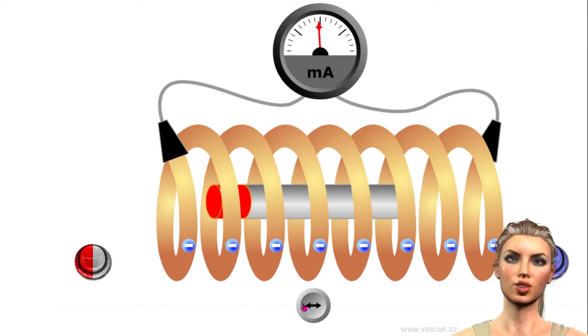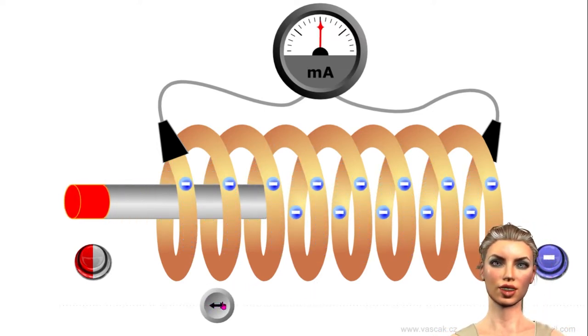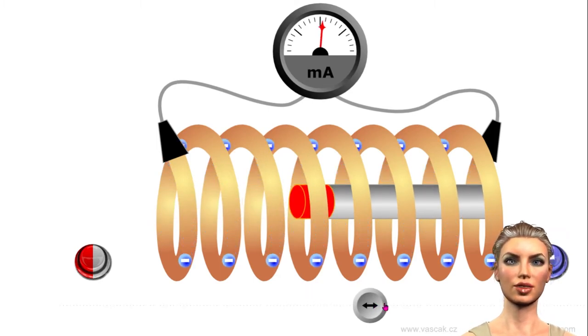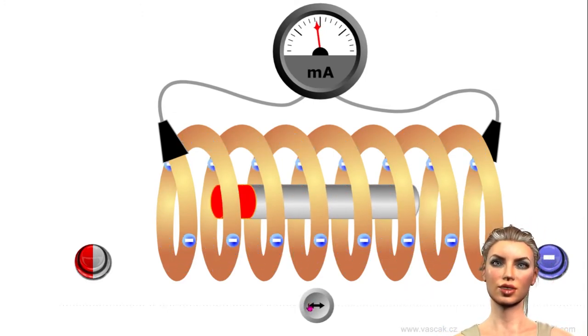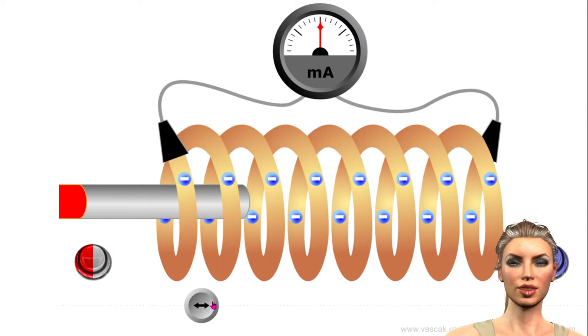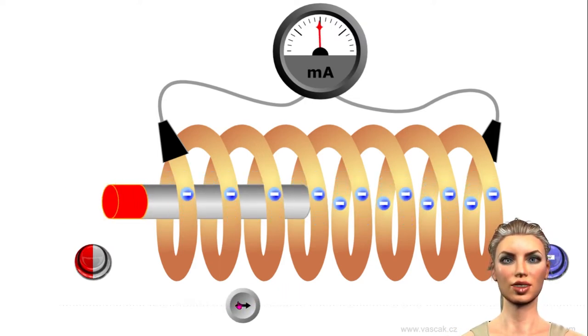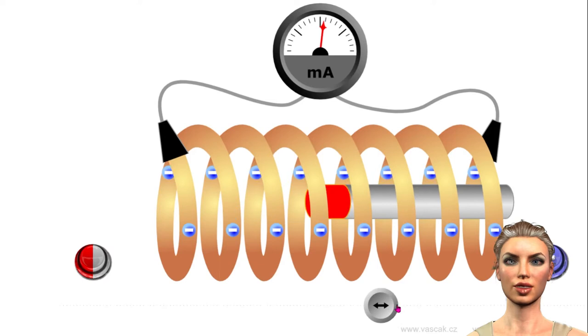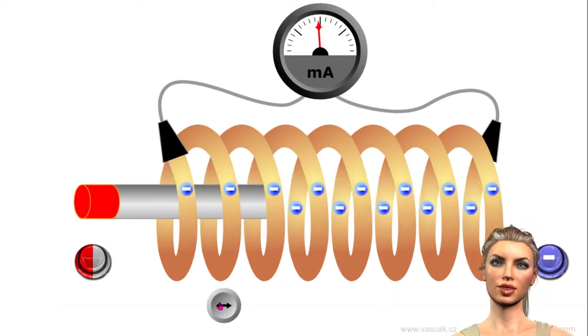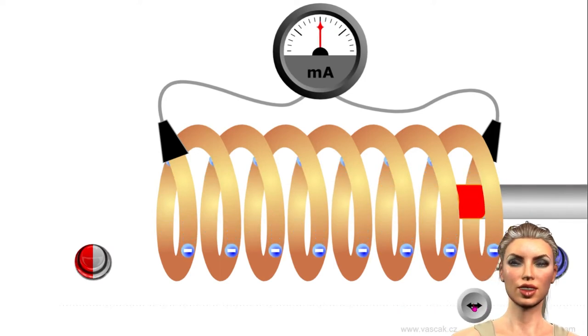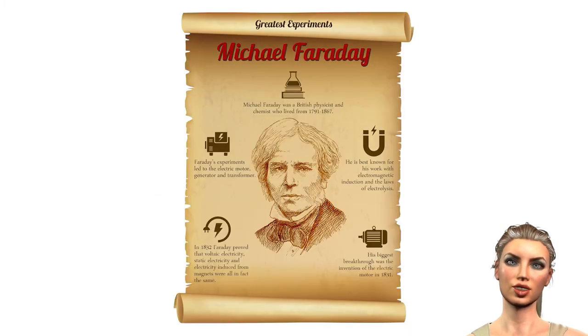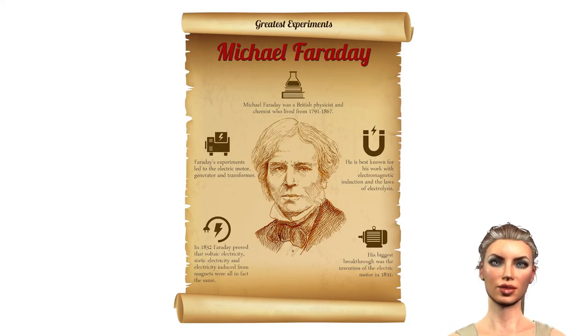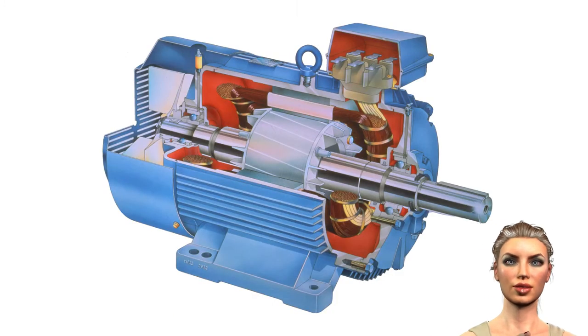But not only can other charges exert forces on an electric charge, magnetic fields such as those generated by magnets can also exert forces on electric charges. These electromagnetic forces that act on electrical charges such as electrons can cause them to move within a conductor in a certain direction, causing a net negative electrical charge to appear at one end of the conductor, while a positive net charge appears at the other end, which will lead to a difference in potential or electrical voltage that may lead to a current if the circuit is closed. This physical phenomenon is described by the so-called Faraday's law of induction, which is the basis of the technology of rotating electrical machines such as generators and motors.